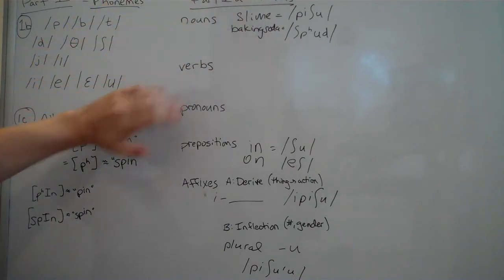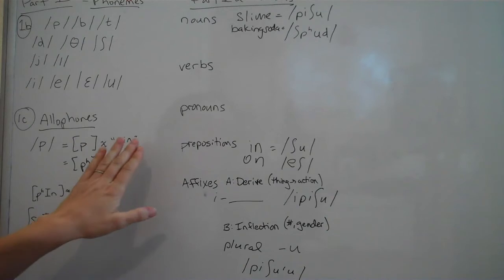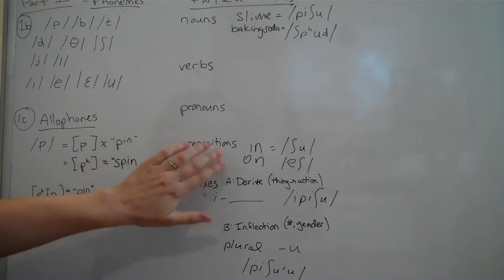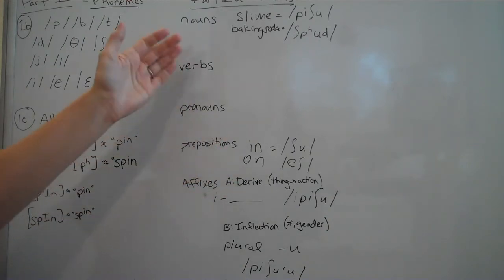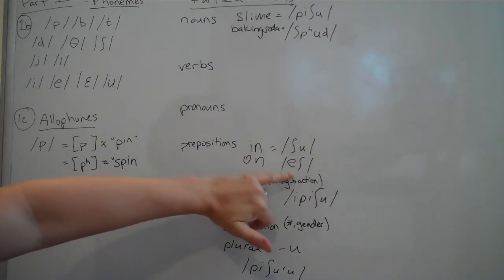So make your nouns, make some verbs, make some pronouns, like he, she, it, things like that. And then I have prepositions, like if you're baking, you need to put baking soda in with something. And so I have shu for in, and esh for on.